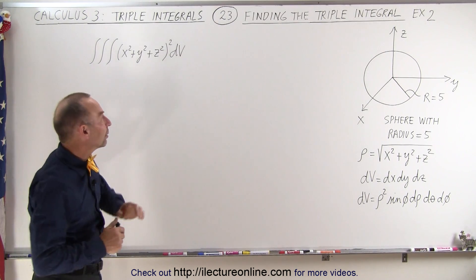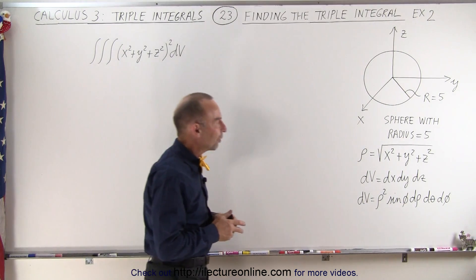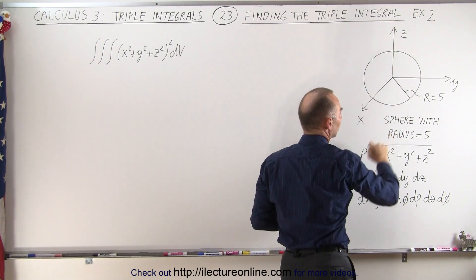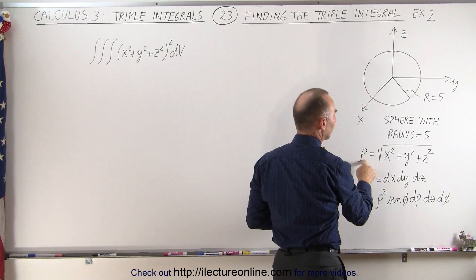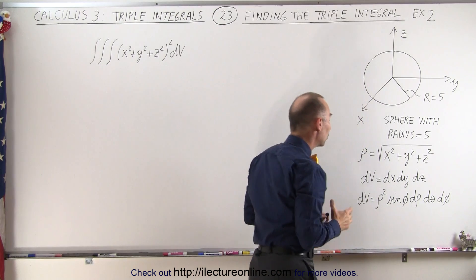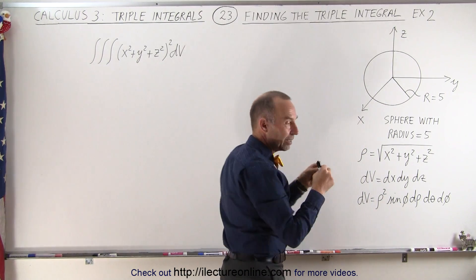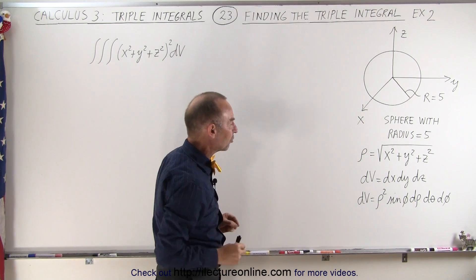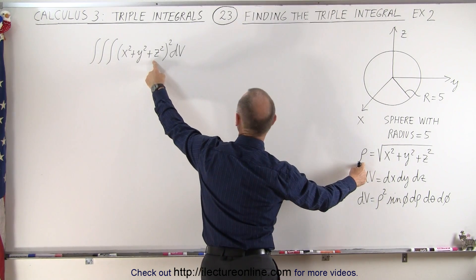It's probably not a good idea to do this in Cartesian coordinates, so we're going to transform that into spherical coordinates. We have a sphere of radius 5 units, and the origin is the center of the sphere. The equation of the radius of the sphere is equal to the square root of x squared plus y squared plus z squared, which means we can change this to rho — the measure in the radial direction.